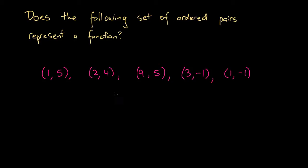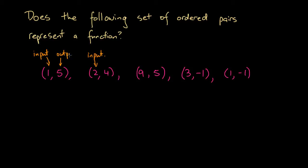This is a set of ordered pairs because each statement between the brackets has a first value and a second value. In order to evaluate whether or not this set of ordered pairs represents a function, we consider each of the first values — like 1 or 2 — as inputs, and the second value in each bracketed statement as an output. So here, 4 is an output.